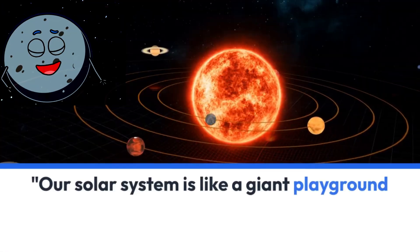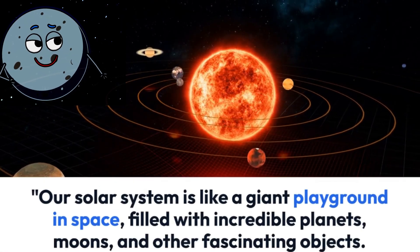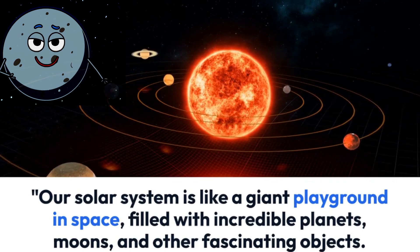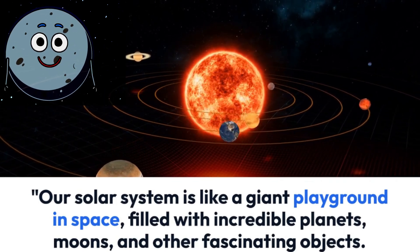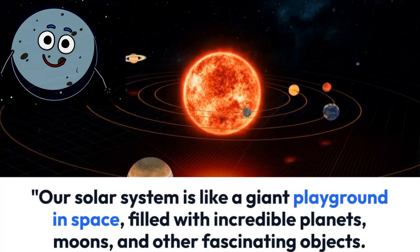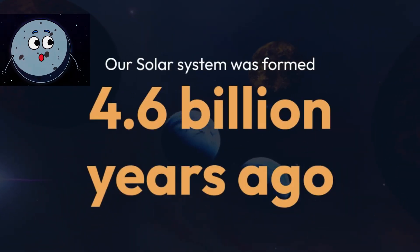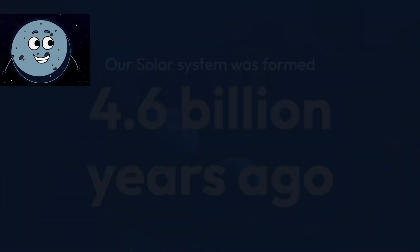Our solar system is like a giant playground in space, filled with incredible planets, moons, and other fascinating objects. Our solar system was formed 4.6 billion years ago.